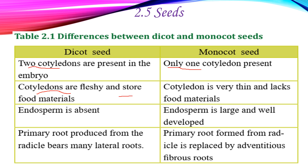In dicots, food is stored in the cotyledon, which is thick. In monocots, the cotyledon is very thin and lacks food materials. The endosperm is absent in dicots but in monocots the endosperm is large and well developed, serving as food storage.